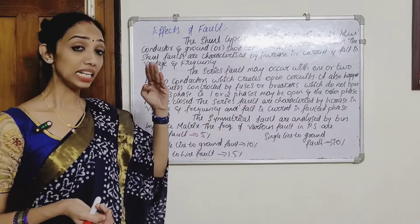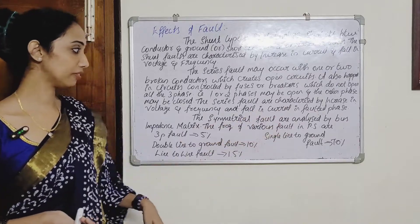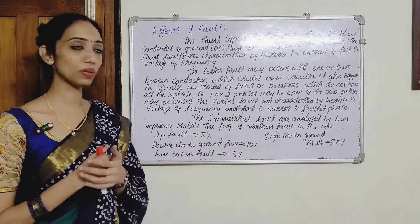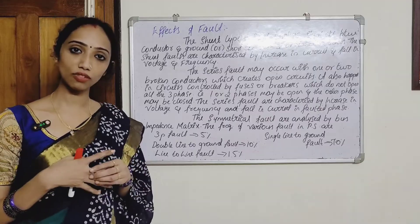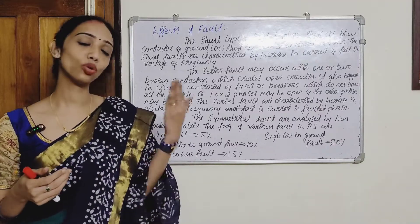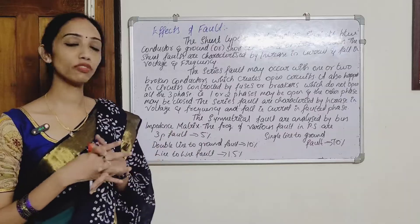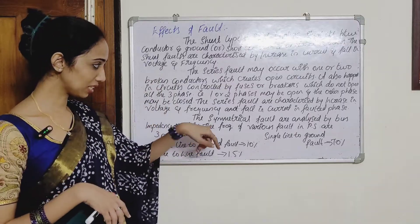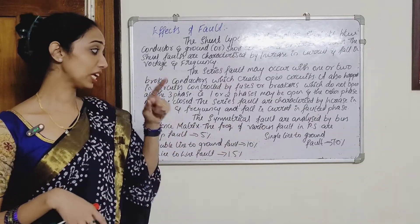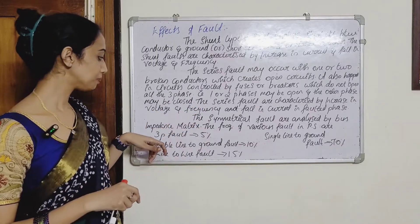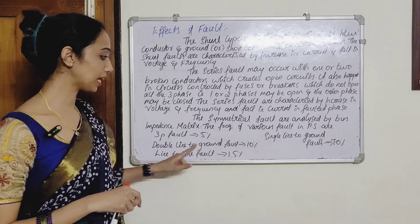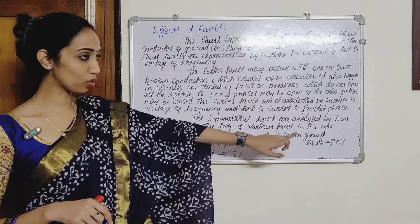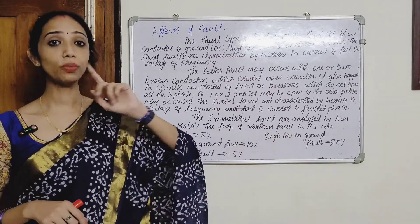Symmetrical faults are analyzed by the bus impedance matrix. Unsymmetrical faults are analyzed by symmetrical components. Regarding fault frequency in power systems: three-phase fault occurs 5% of the time, double line-to-ground fault 10%, line-to-line fault 15%, and single line-to-ground fault 70% — making single line-to-ground the most common fault.